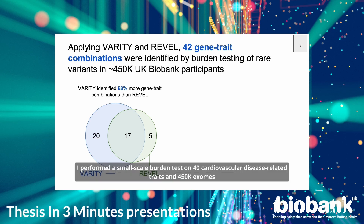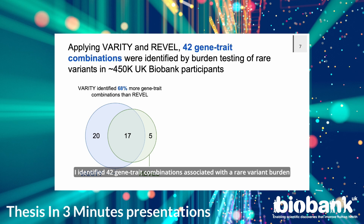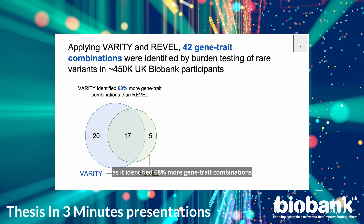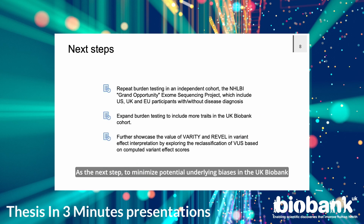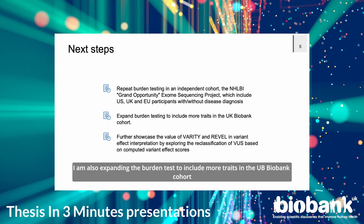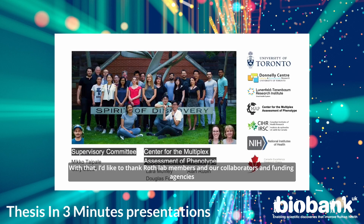Applying the best performing predictors, I performed a small-scale burden test on 40 cardiovascular disease-related traits and 450 exomes, identifying 42 gene-trait combinations associated with rare variant burden. Varity showed stronger sensitivity than REVEL, identifying 68% more gene-trait combinations. Additionally, this burden test identified 133% more gene-trait combinations than the genome-wide burden test using the 450 exomes. As the next step, I will repeat the burden test in another independent cohort and expand the analysis to include more traits. I'd like to thank RossLab members, our collaborators, and funding agencies. Thank you for listening.